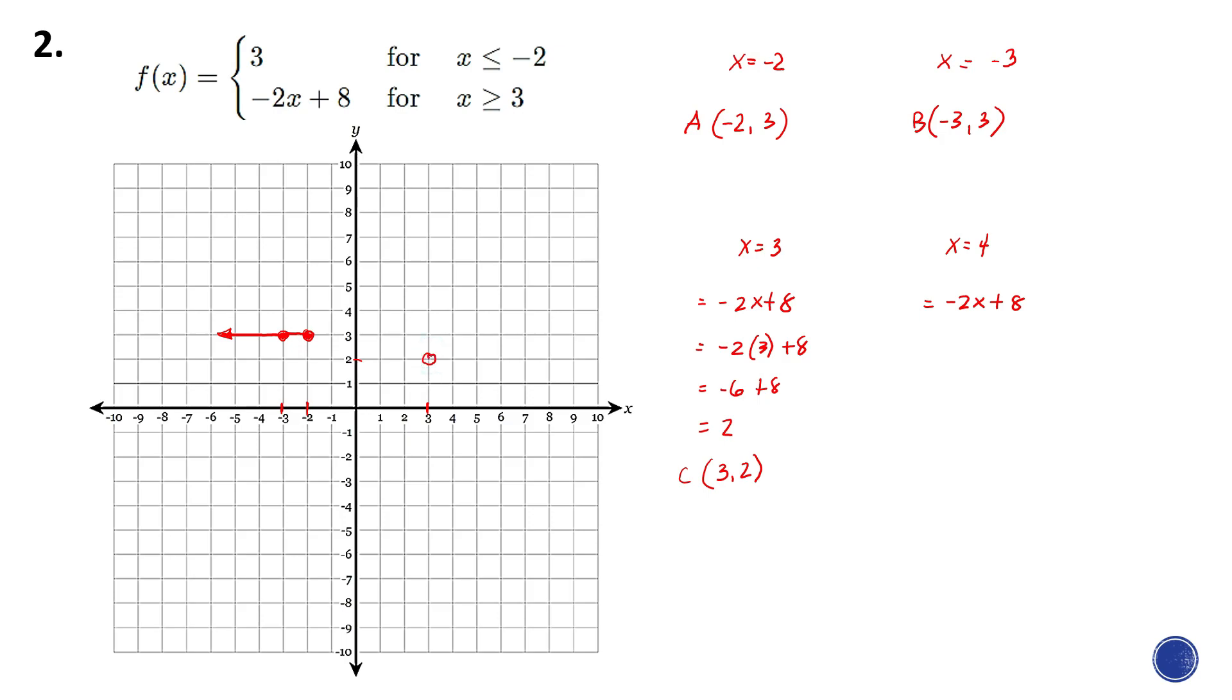That should be shaded because we have a greater than or equal to symbol. Next, -2 times 4 plus 8. That's -8 plus 8, which equals 0. So point D will be (4, 0).